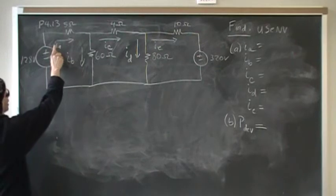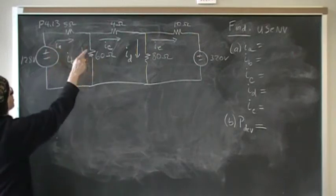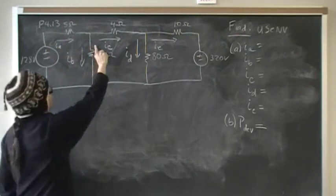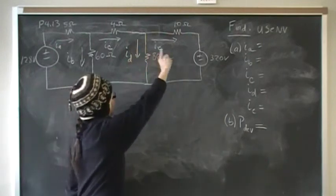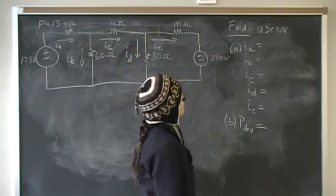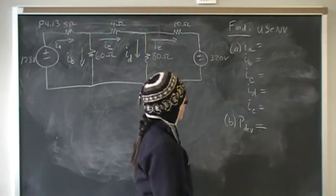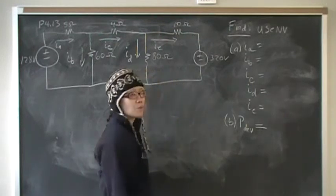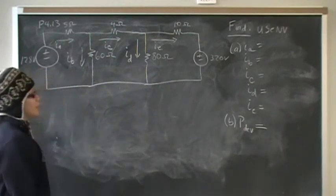And we have to find the branch currents Ia, Ib, Ic, Id, Ie, and we're supposed to use the node voltage method to find these branch currents, and then at the end we need to find the power that's developed by this circuit.